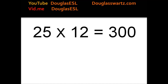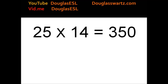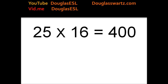25 times 13 equals 325. 25 times 14 equals 350. 25 times 15 equals 375. 25 times 16 equals 400.